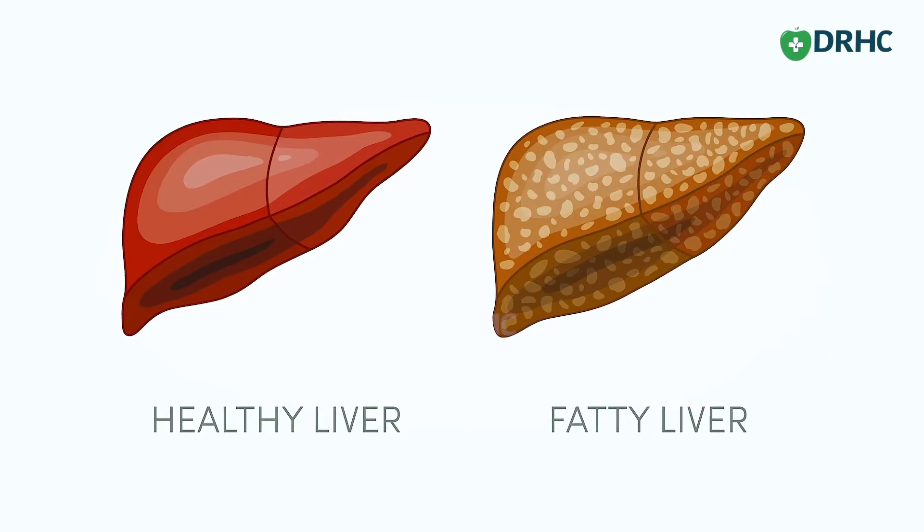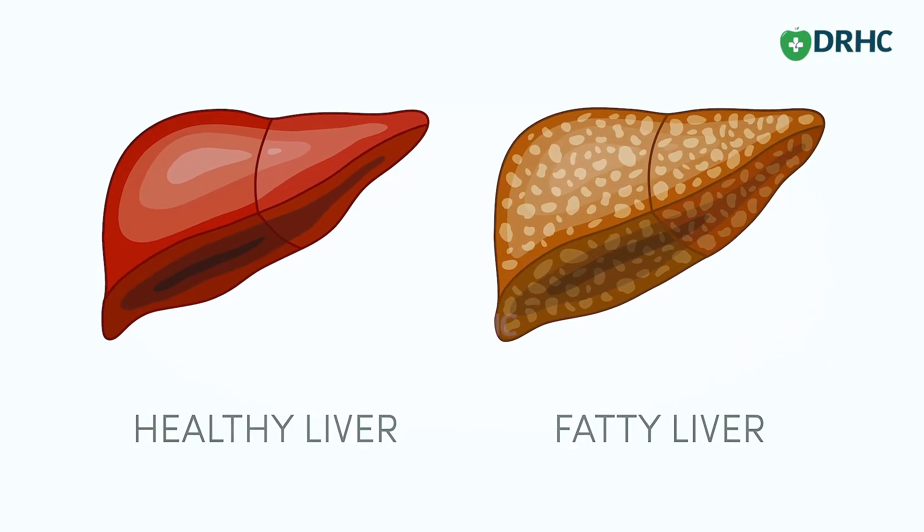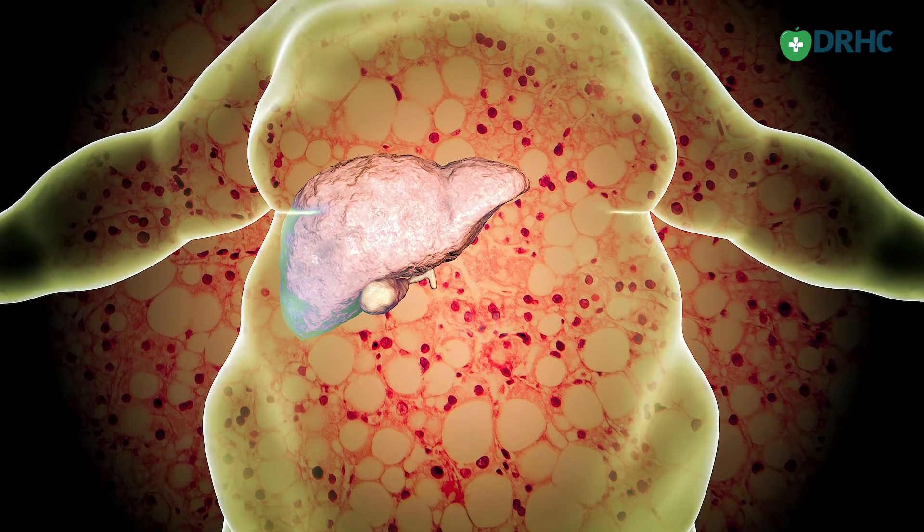Today I'm going to speak about fatty liver. Fatty liver is the accumulation of mainly triglycerides in the liver when it accumulates or occupies around five percent or more of the liver tissue. At that point, we say that this is a fatty liver. It is common in obese patients.